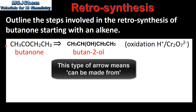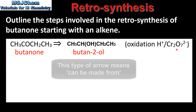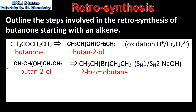So working backwards, butanone can be made from butan-2-ol. This is an oxidation reaction using the oxidizing agent acidified potassium dichromate.